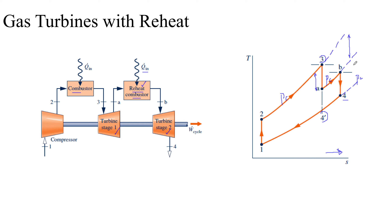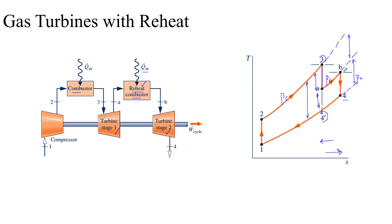If we let the gas expand from three to four-dash in a single stage, those two constant pressure lines are closer together. Whereas if we let the gas expand from three to A first, and then from B to four, the B-to-four distance has increased. That means the work done across the two turbine stages would be greater compared to the work done across only one turbine stage.